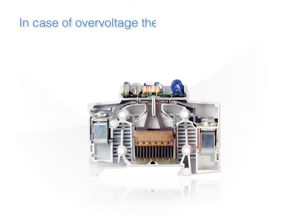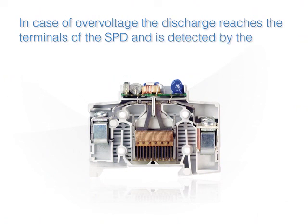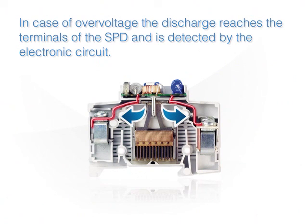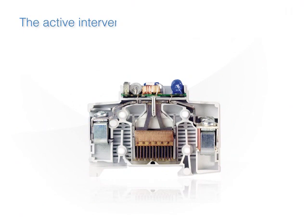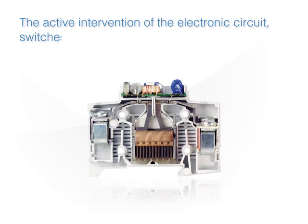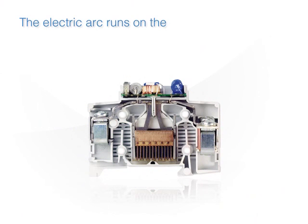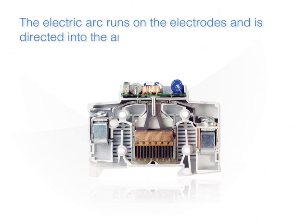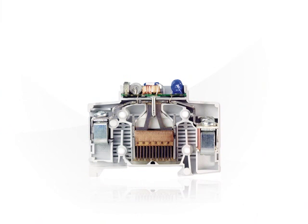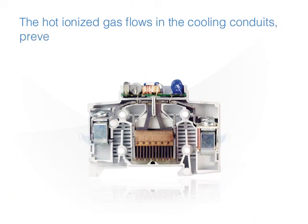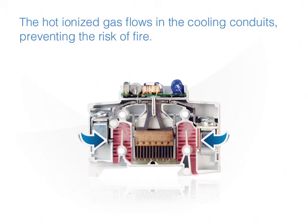In case of overvoltage, the discharge reaches the terminals of the SPD and is detected by the electronic circuit. The active intervention of the electronic circuit switches on the electric arc in advance. The electric arc runs on the electrodes and is directed into the arc extinction chamber. The hot ionized gas flows in the cooling conduits, preventing the risk of fire.